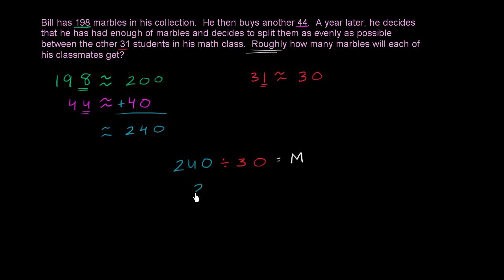Or that 240 is equal to m times 30. So that's the same thing as saying that 240 is equal to m times 30, where m is what we're trying to figure out, the rough number of marbles per student. So let's think about what m is.